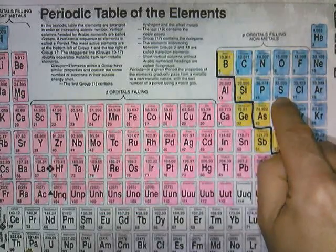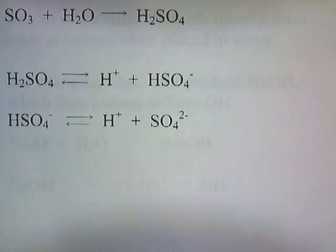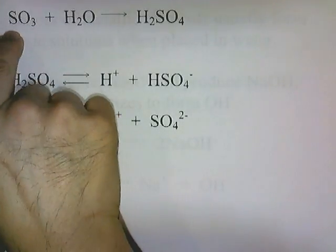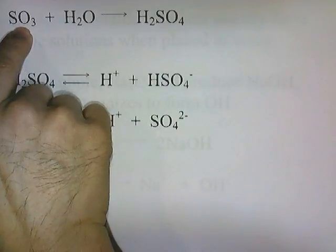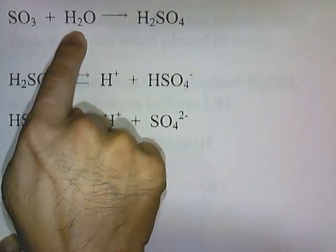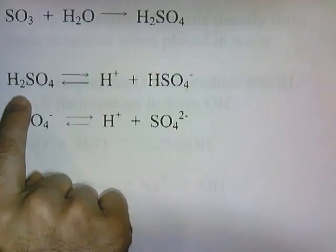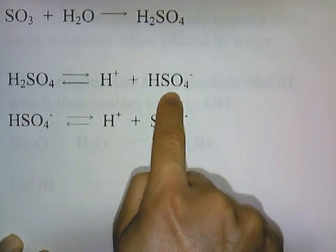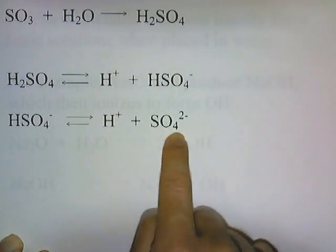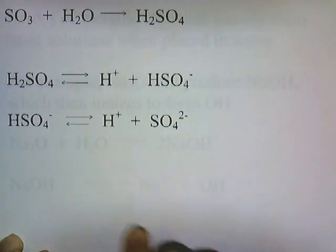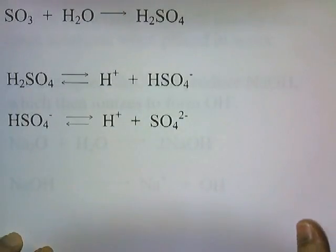So here we are — sulfur, a nonmetallic element, bonded to oxygen, making it a nonmetallic oxide. If you bubble this gas through water, it forms H2SO4. And as we saw previously, H2SO4 then dissociates to form H+ in the first step, and then HSO4- dissociates to form H+ and SO4 2-. That's how a nonmetallic oxide produces an acid when you place it in water.